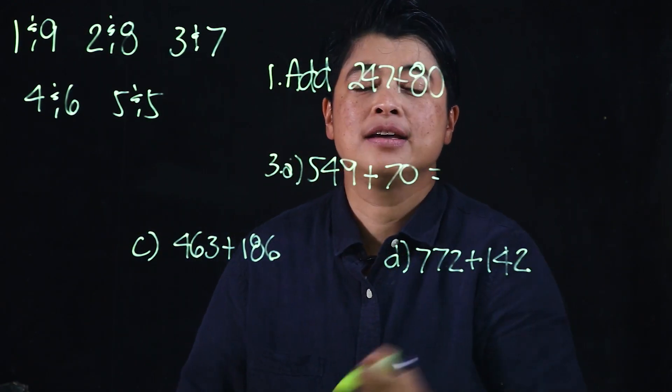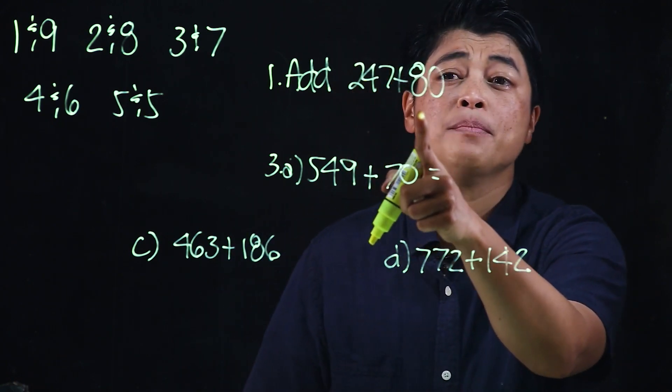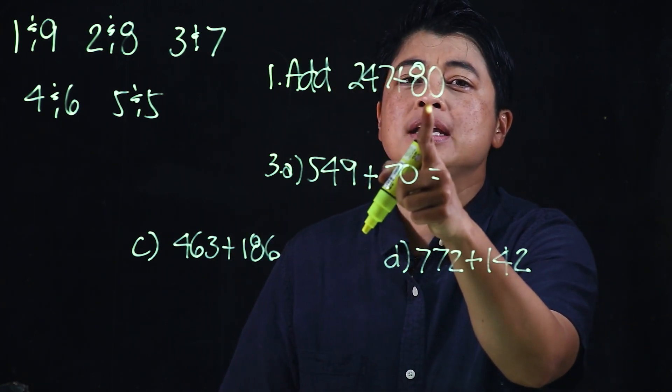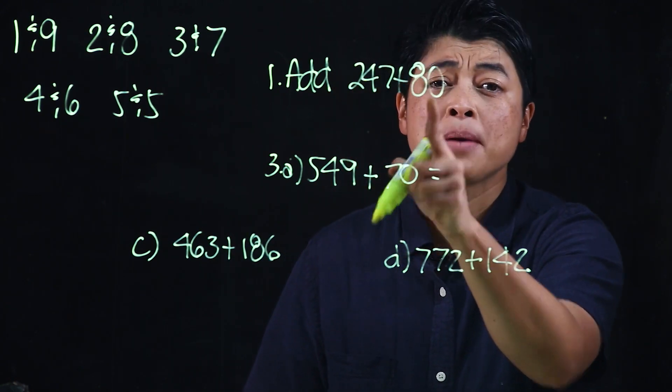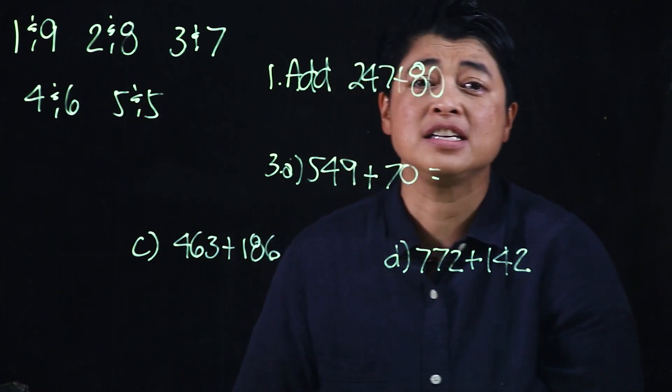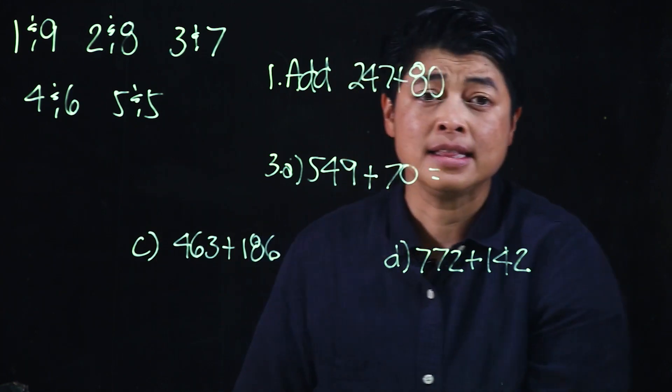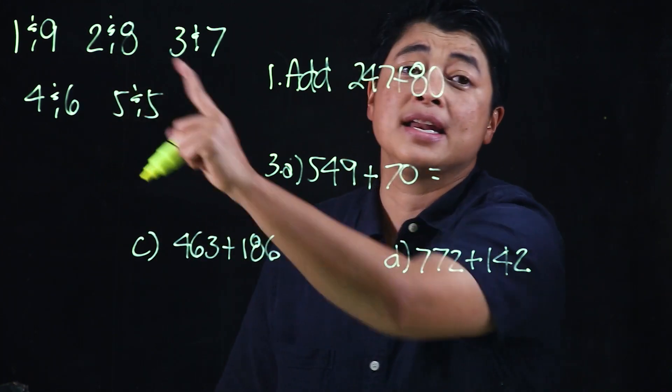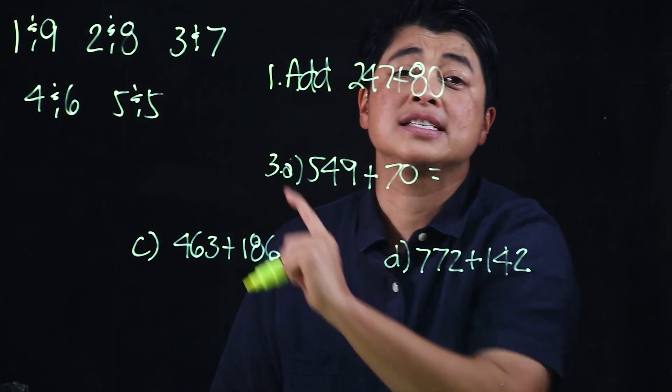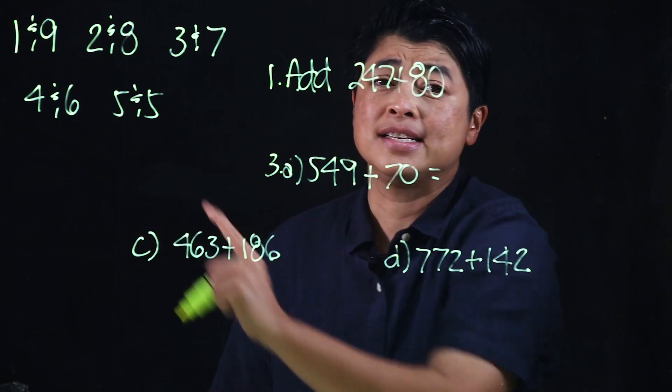When adding these mentally, we also need to remember that outside of these pairings, we have pairings of 10 and 90, 20 and 80, 30 and 70, 40 and 60, and 50 and 50. These make up a hundred.